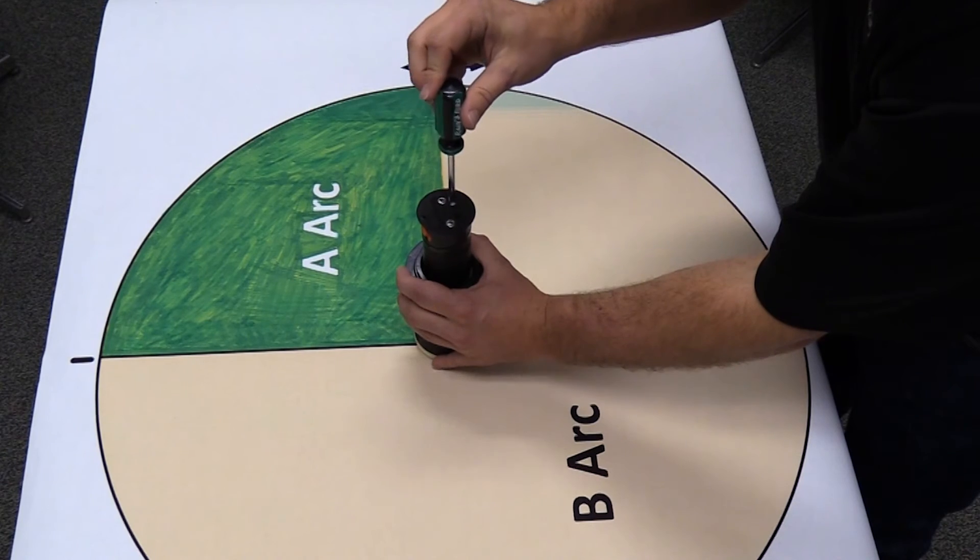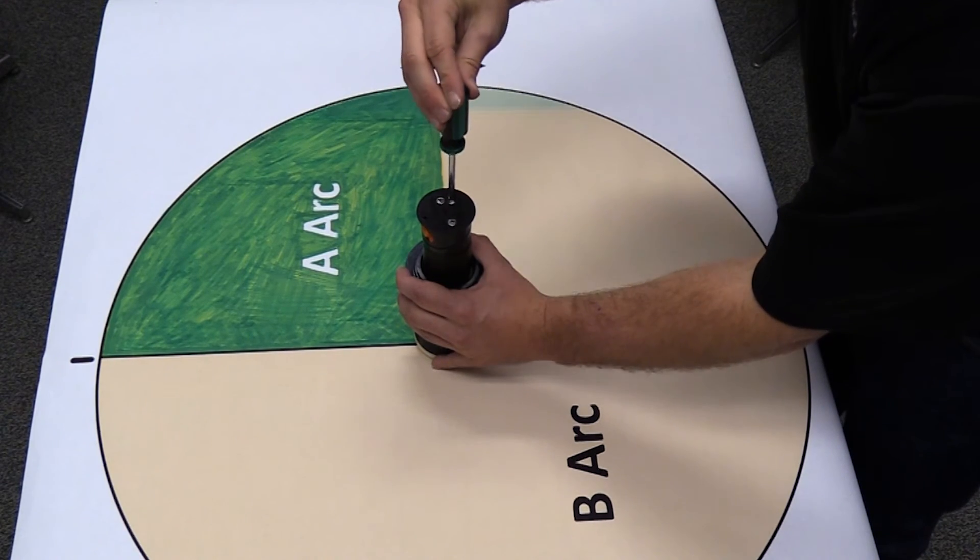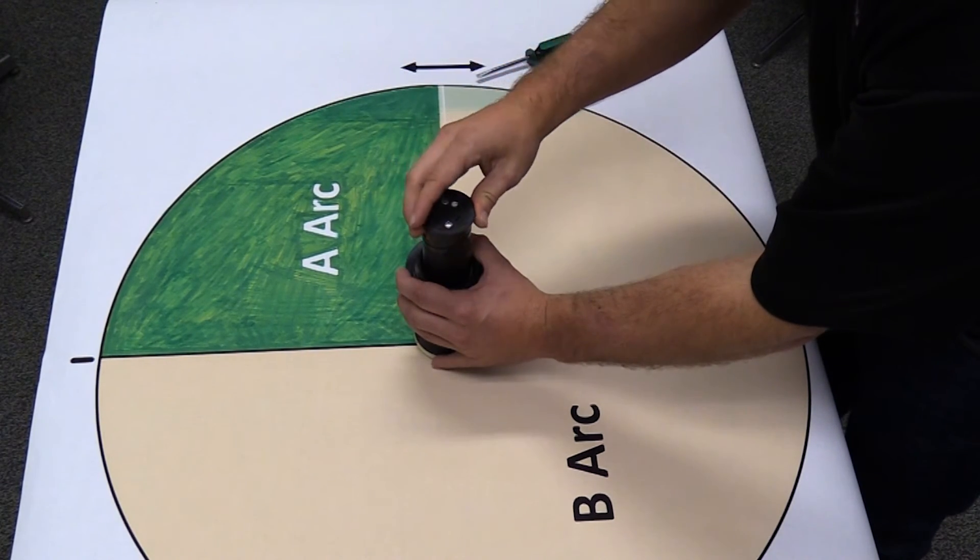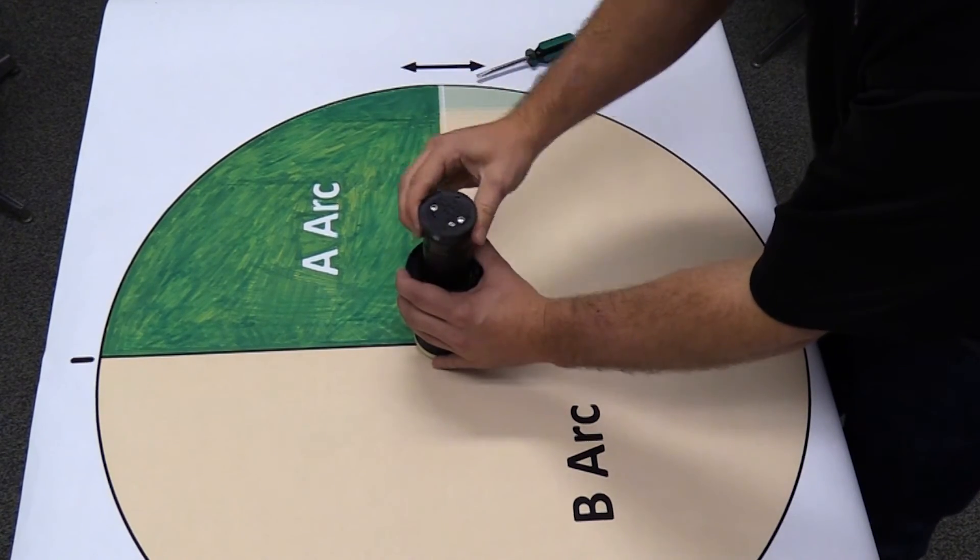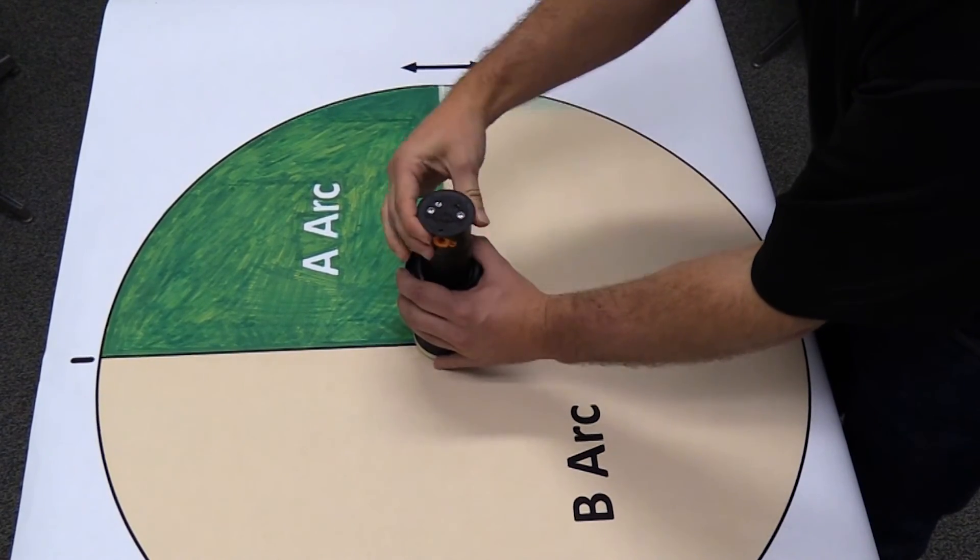We can also change the rotor into full circle mode by turning the full circle part circle adjustment stem counterclockwise. As you can see, we now have no stops.